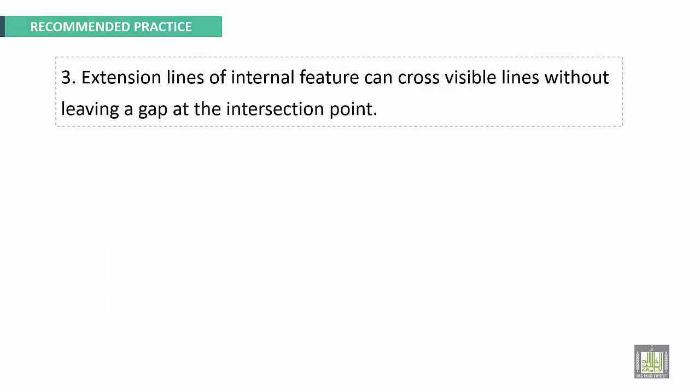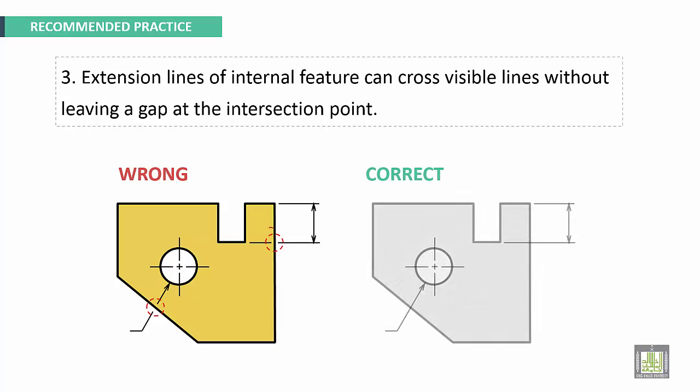Extension lines of internal features can cross visible lines without leaving a gap at the intersection point. This example, this is wrong. We have not to make a gap here. These lines should not be broken. This is good, and here also, this is good.